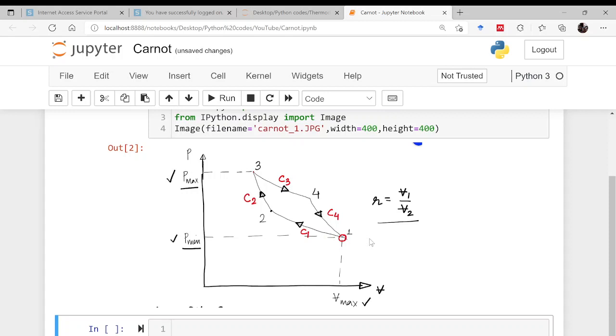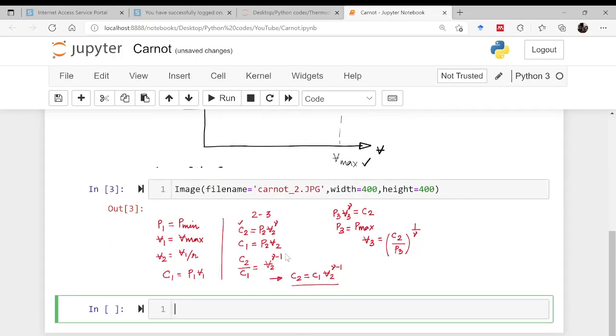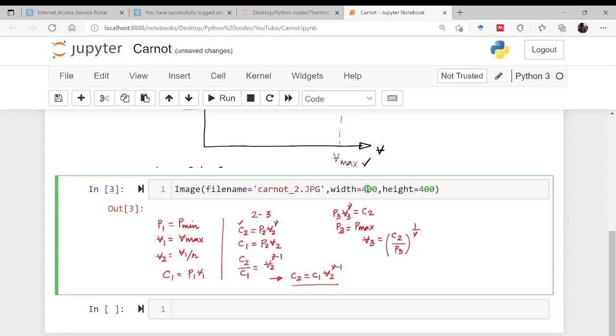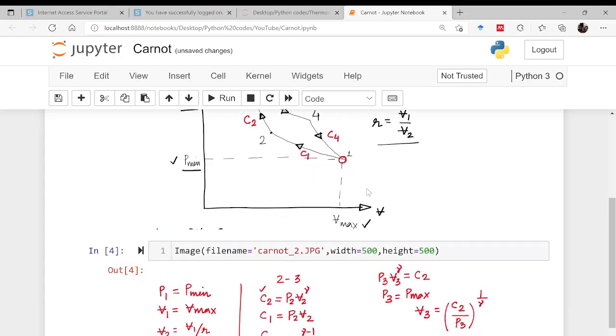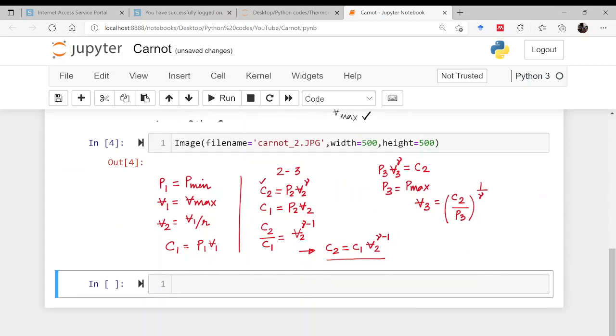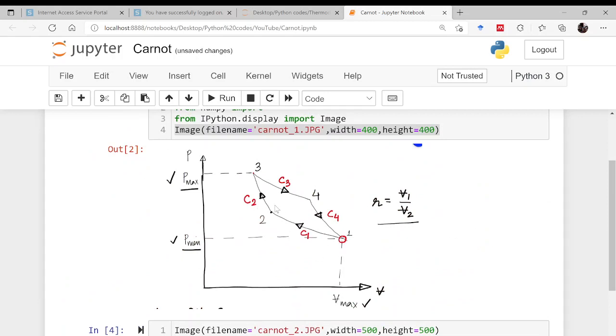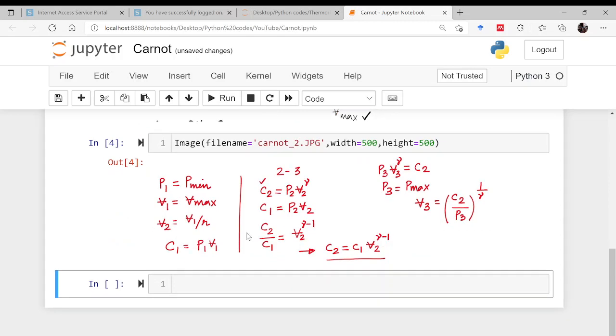Now we will be starting with the process 1-2. I will be copying this further and pasting here so that I can call the process number 1-2 which I have written there. Let me increase the width and height slightly so that is much visible to you people. Now if you look, 1 to 2 is the process we are interested in.